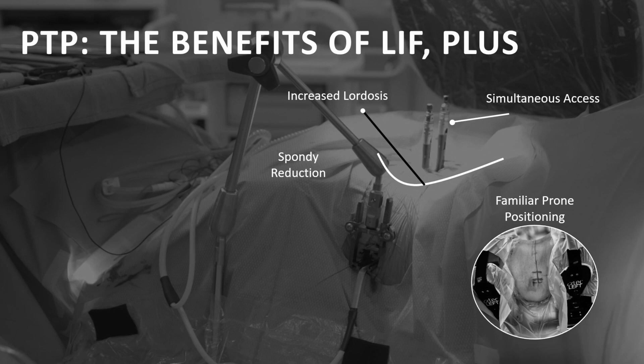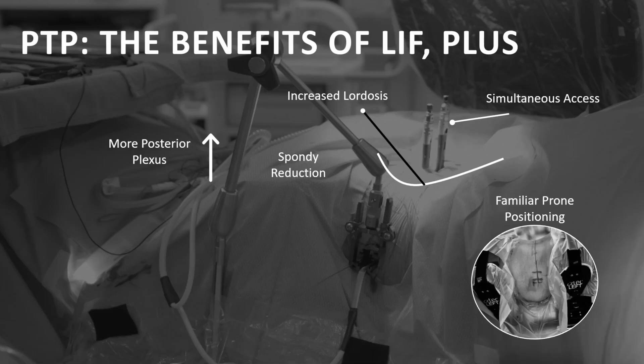Spondylolisthesis reduction — about 70–75% of those cases reduce on the table by position alone. We learned that the plexus migrates posterior with the muscle, which is very interesting because in L4-5, the real question is how safely we can go when the plexus is more anterior. Because of this position, the plexus is about 20% more posterior, which makes L4-5 easier.